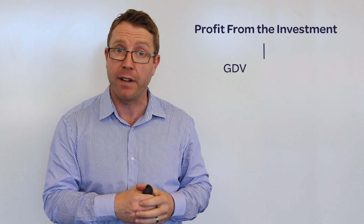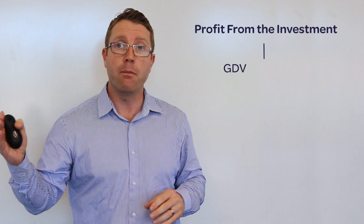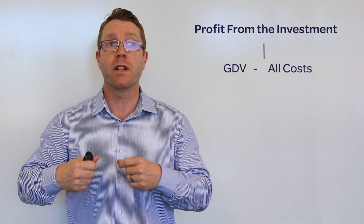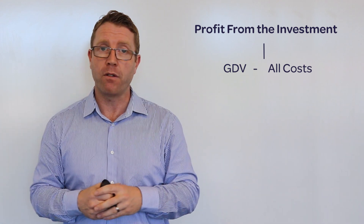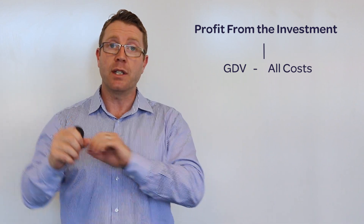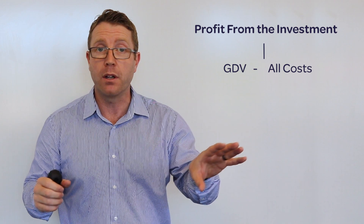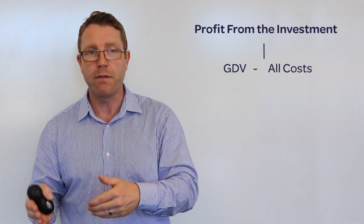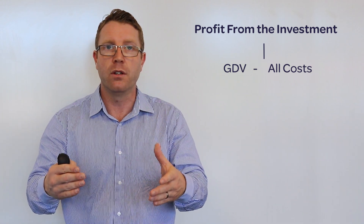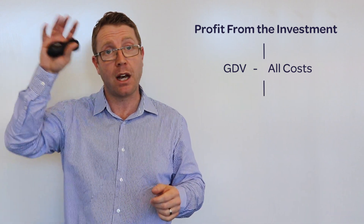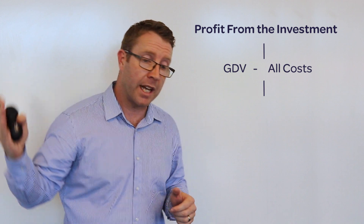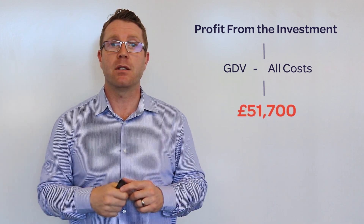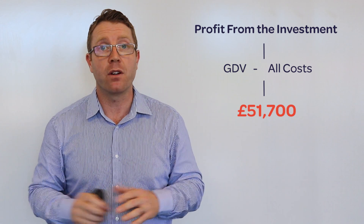The first part of the equation: the profit from the investment. You take that end sale price — the GDV of £160,000 — and you minus all of the costs and commitments you have to pay before you get to your profit. So you take off the bridge or any loan, the deposit, solicitor's fees, surveys, searches, refurb, selling costs — all costs. In this case, we start with £160,000, take off all the costs, and we're left with £51,700. That £51,700 is our profit.